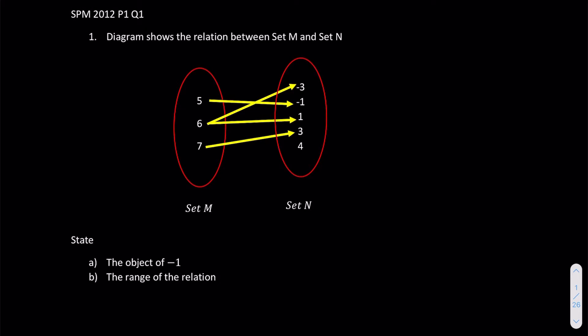The diagram shows the relation between set M and N. So we have two sets here, and they ask us to find the object of negative 1. You still remember what is object? Object is nothing but just the individual choices in our domain. So 5, 6, 7 are our objects.